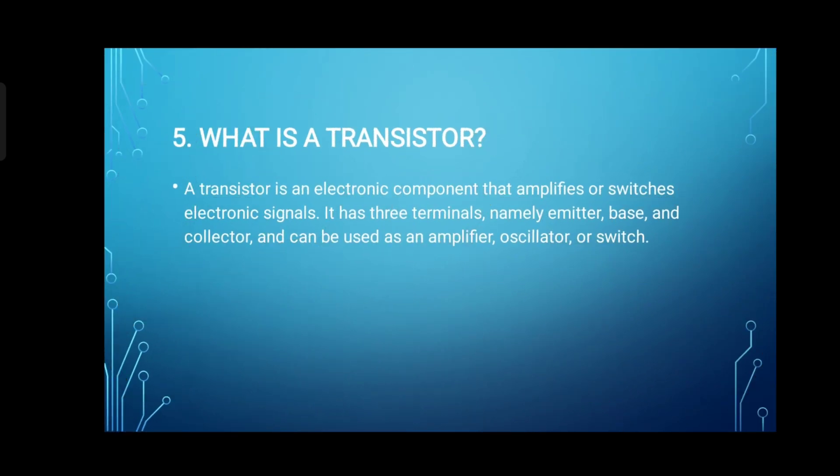5. What is a transistor? A transistor is an electronic component that amplifies or switches electronic signals. It has three terminals, namely emitter, base, and collector, and can be used as an amplifier, oscillator, or switch.